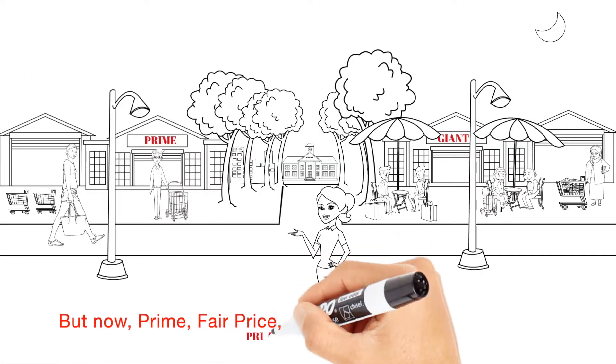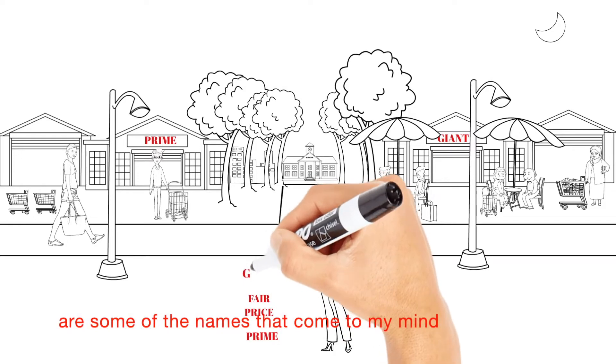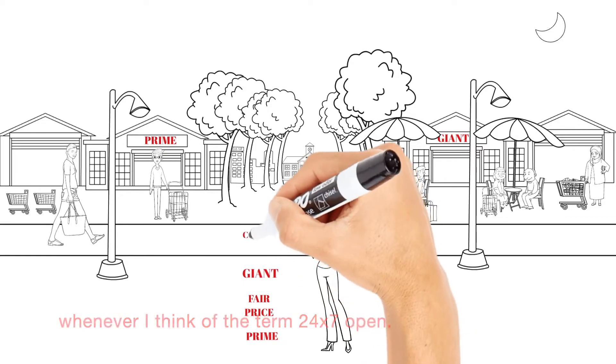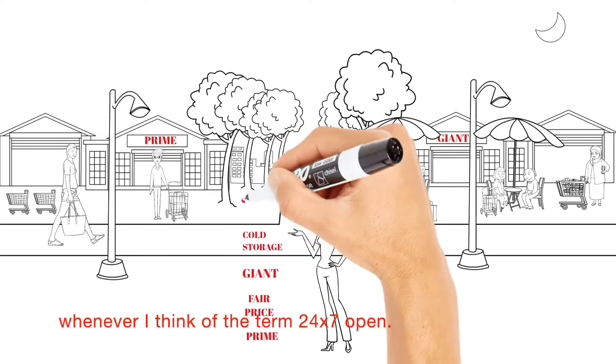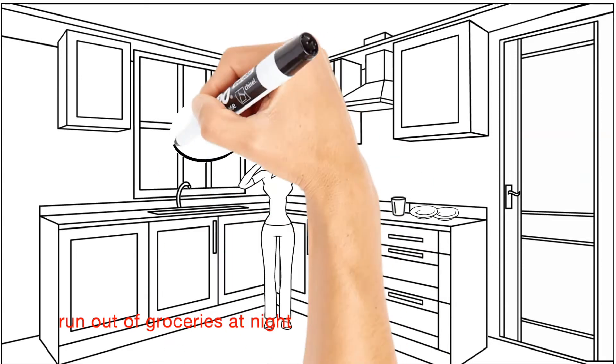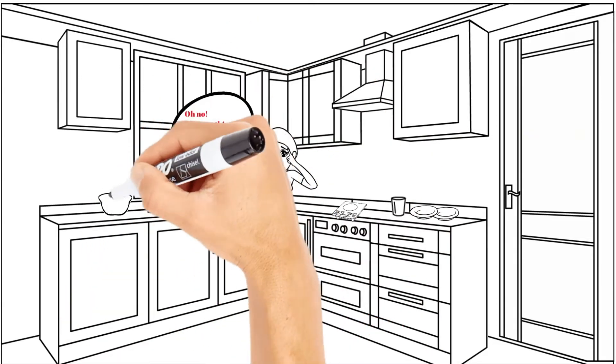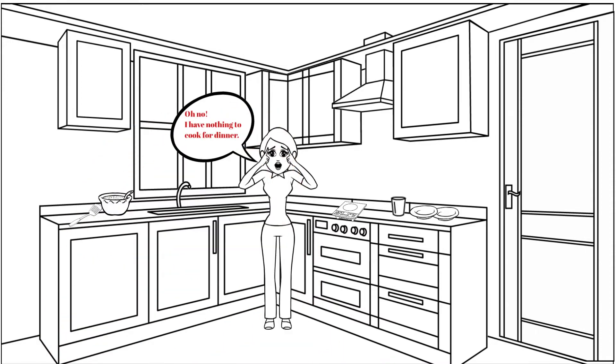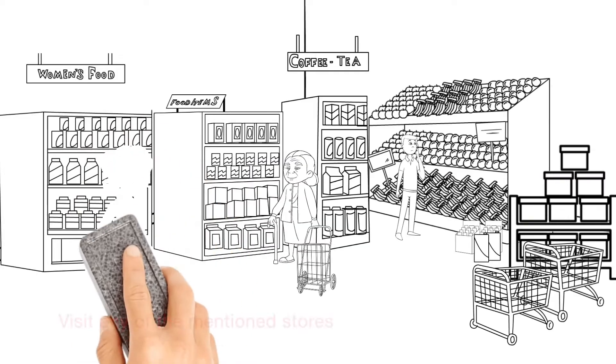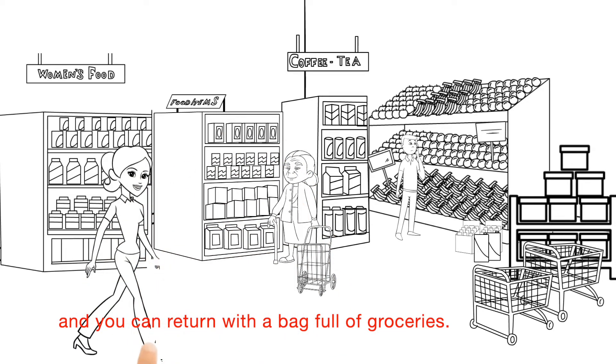But now, Prime, Fair Price, Giant, Cold Storage and Sheng Siong are some of the names that come to my mind whenever I think of the term 24 x 7 open. There is no need to worry even if you run out of groceries at night and need to prepare something for dinner.